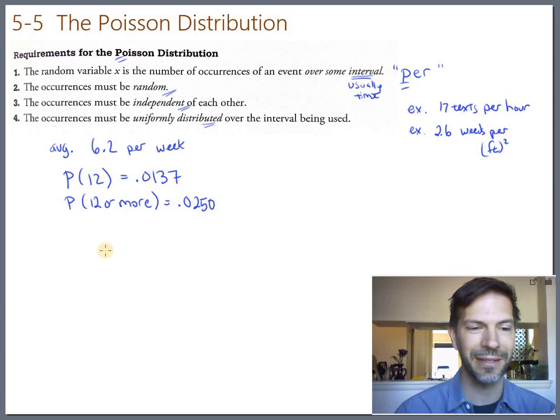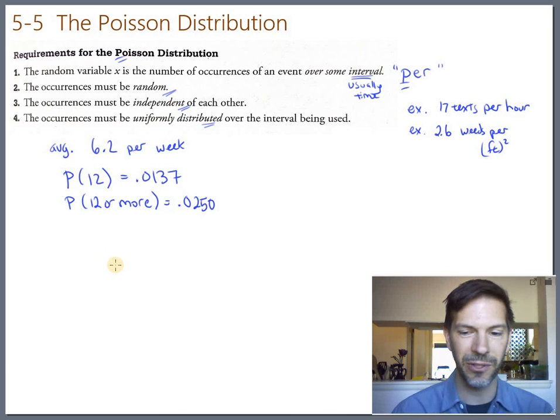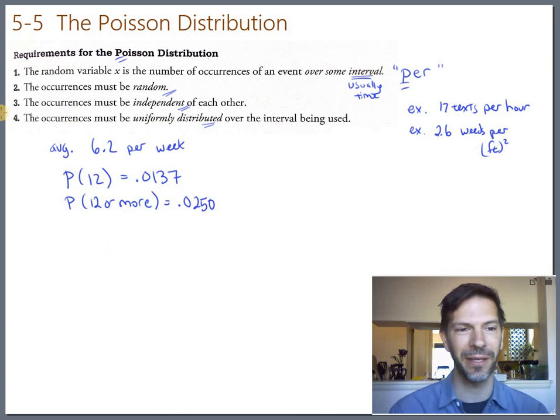That's just a basic illustration of the Poisson distribution. The book and some of the homework problems walk you through a specific process using the Poisson distribution. We'll look at an example of that in the next video.